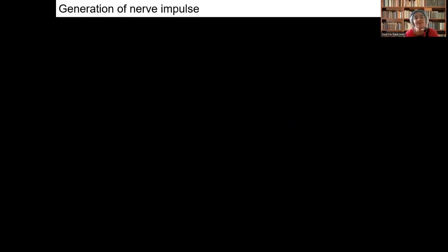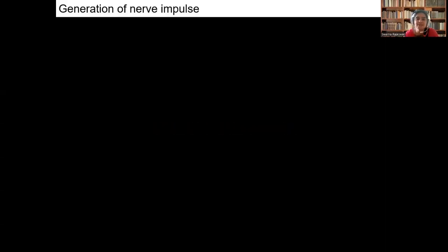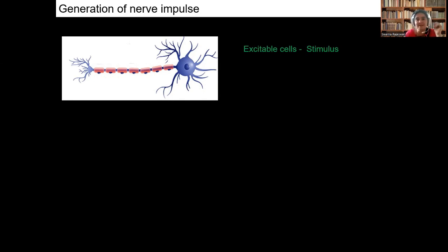In our previous videos, we have discussed about the structure of the neuron. So now, we will be discussing how the nerve impulse is transmitted from one neuron to another neuron. Before going into that, let us introduce the word stimulus. What is meant by stimulus? It is any change in the external environment that is detectable — we call it as stimulus.